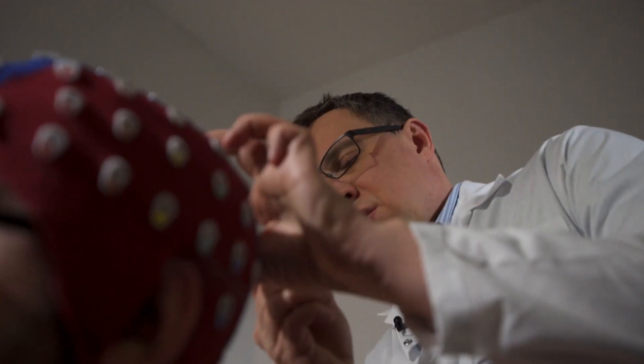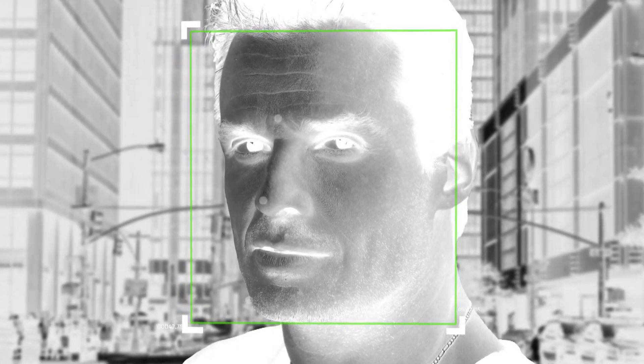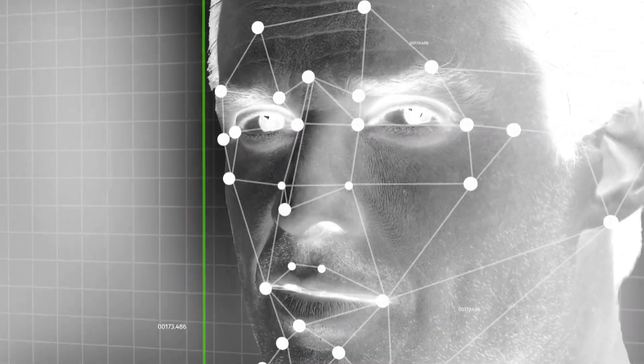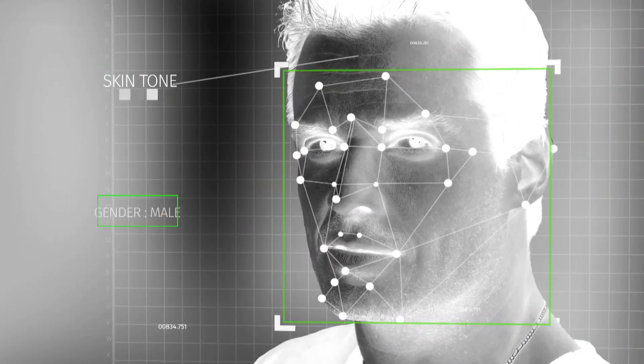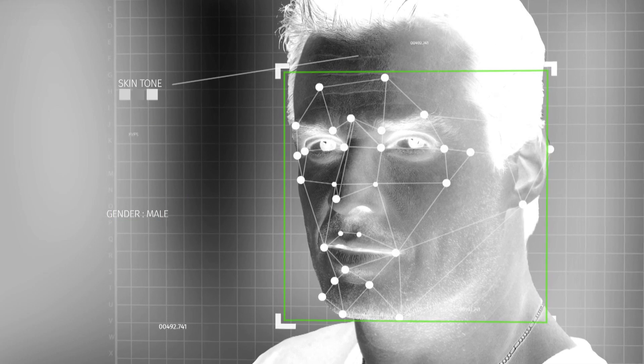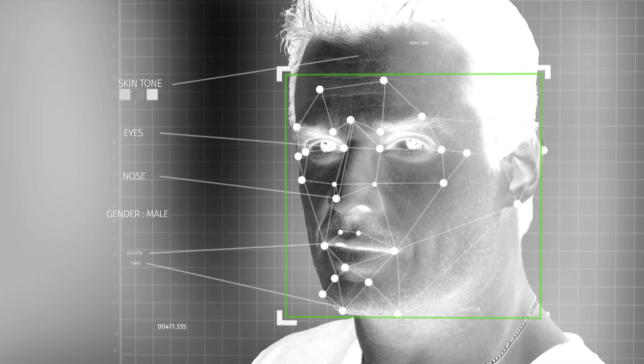Our brains are continuously collecting information. In this experiment we'll present you faces. Faces are pretty standard. Within fractions of a second we register skin tone, gender, the shape of a person's eyes, nose and more.